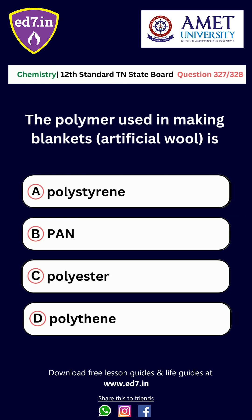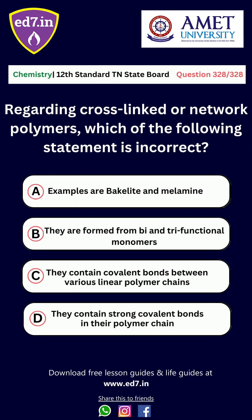Question number 326: The polymer used in making blankets is — Option A: Polystyrene, Option B: PAN, Option C: Polyester, Option D: Polythene. The correct option is Option B, PAN.